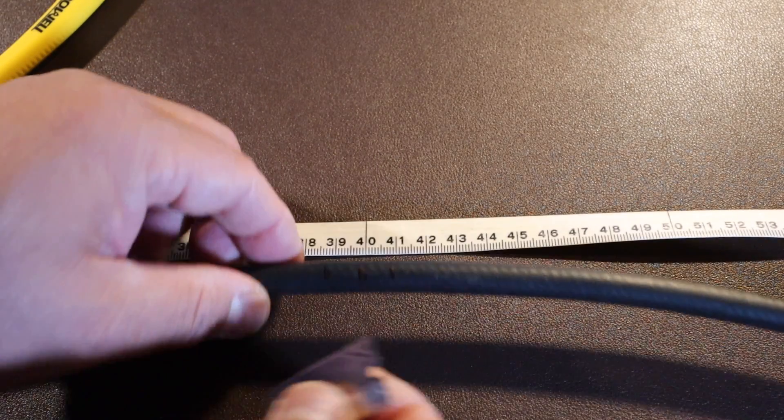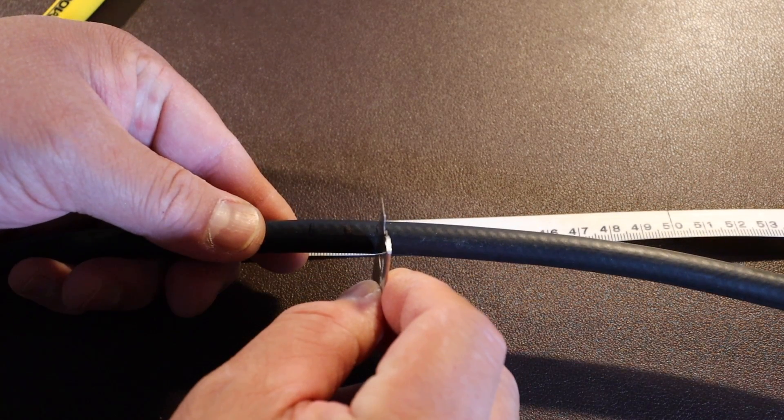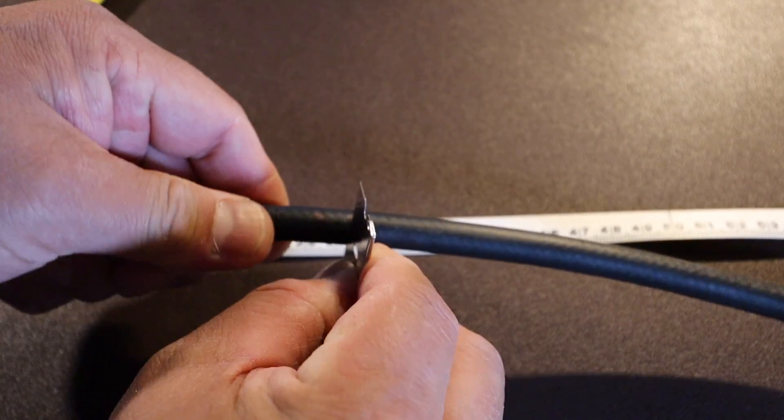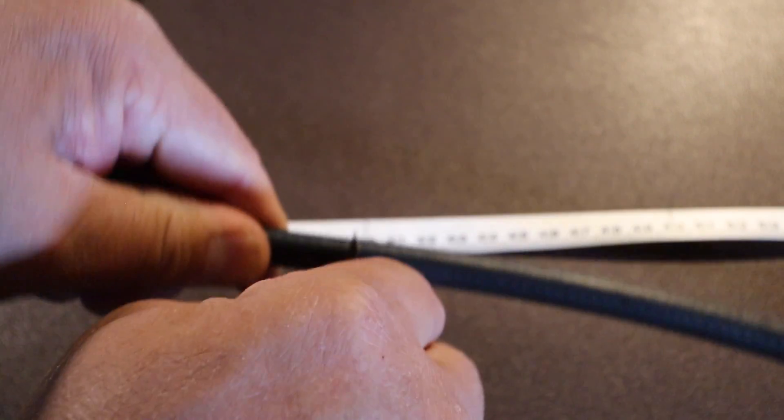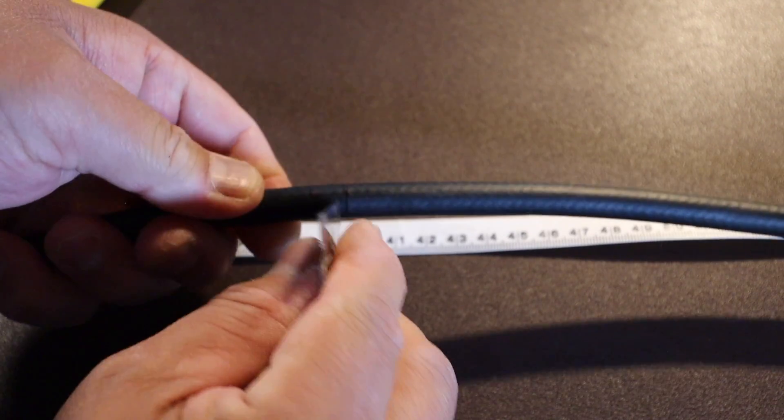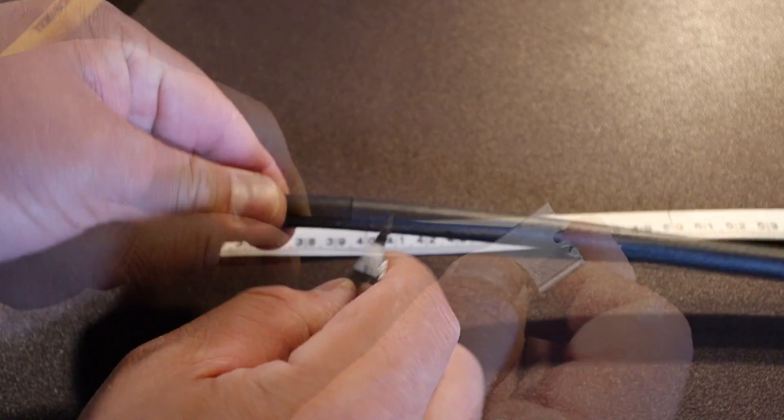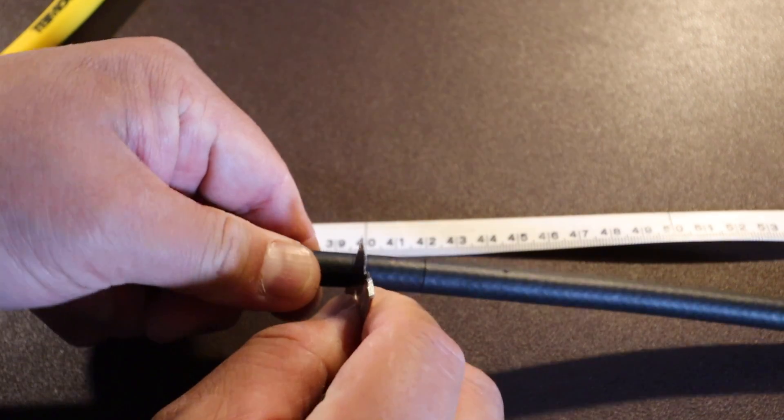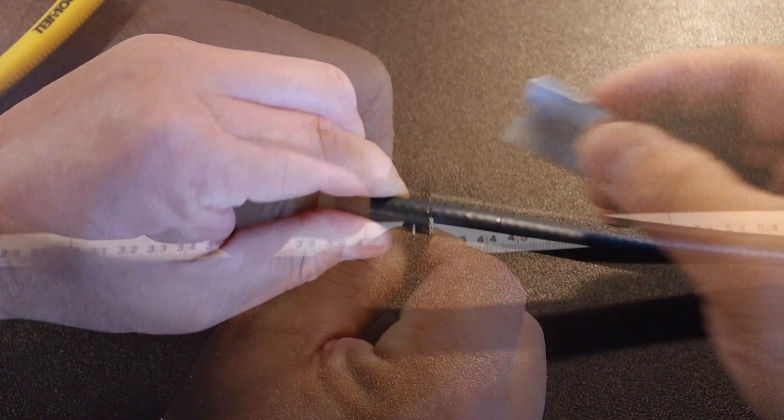Now we're going to score around. And basically our main purpose is to remove the outer sheath. That's one side. Here's the other side.